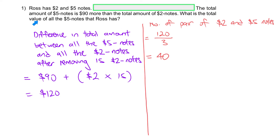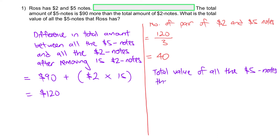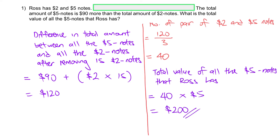So what is the total value of all the $5 notes? We have 40 $5 notes. Total value of all the $5 notes that Ross has: 40 times $5, and that gives us the answer of $200.